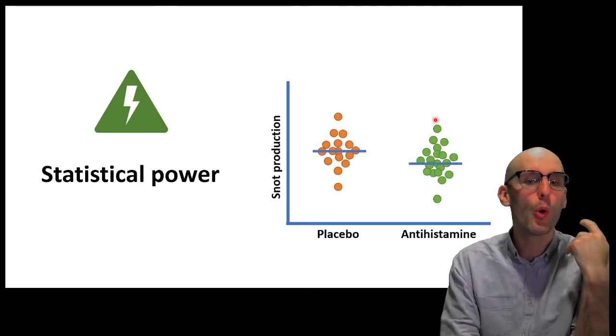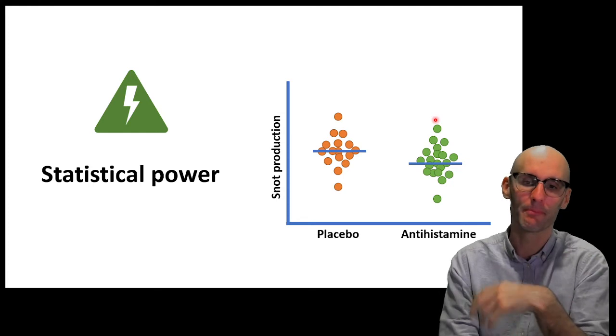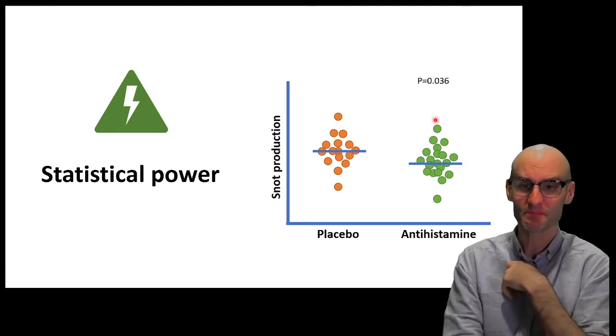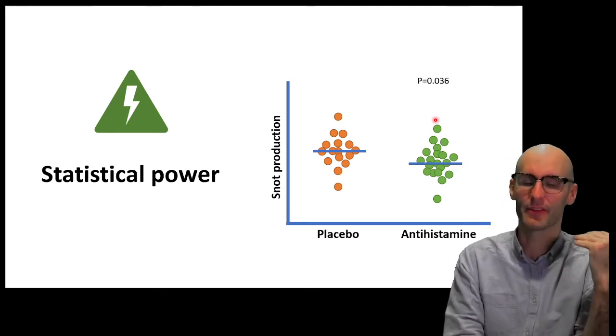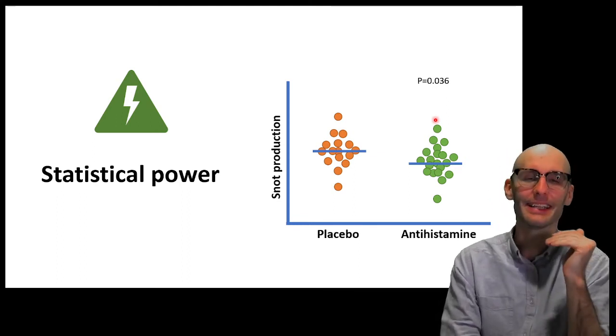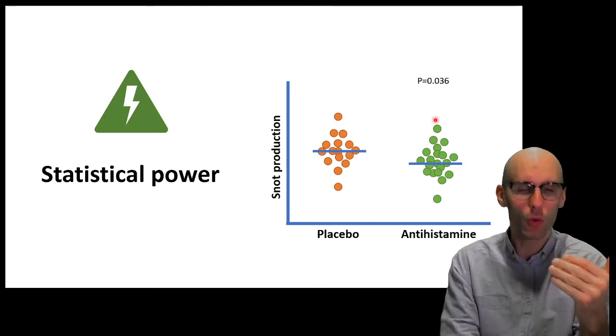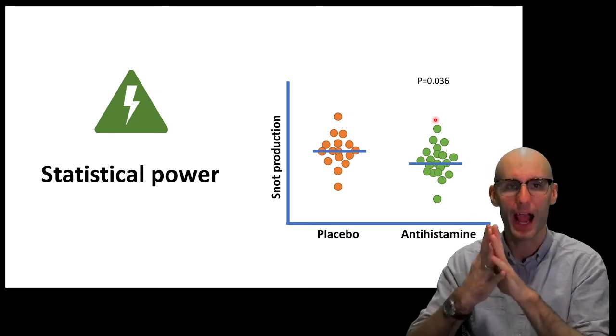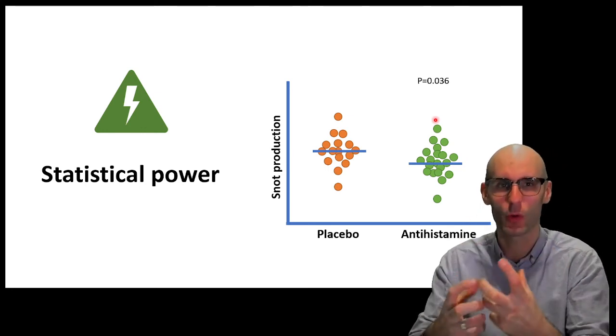Now, if we ran that again with more patients. This time, you know, maybe 20 in each group. We get a statistically significant result. So, the first result wasn't caused by the fact that antihistamines don't work. It was caused by the fact that we underpowered our study. We didn't have statistical power.